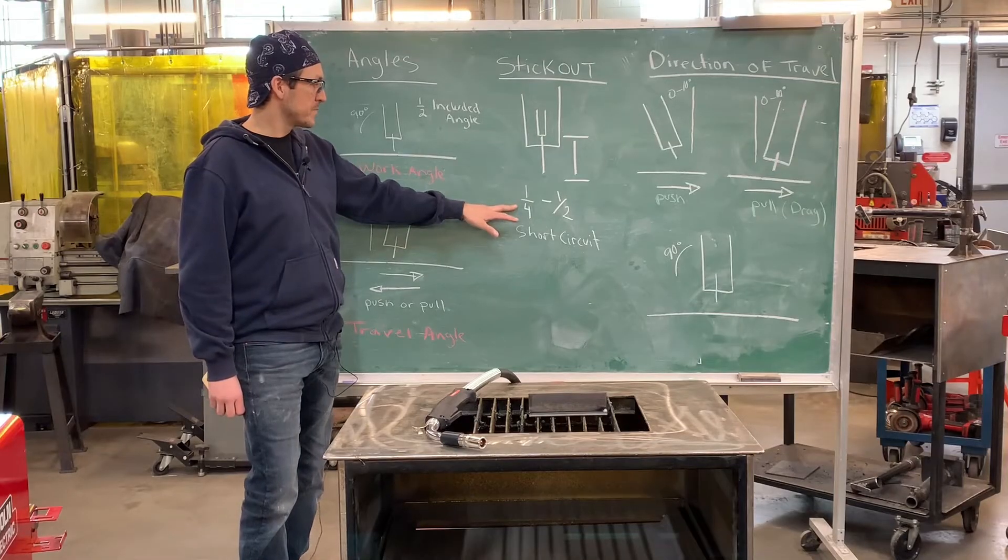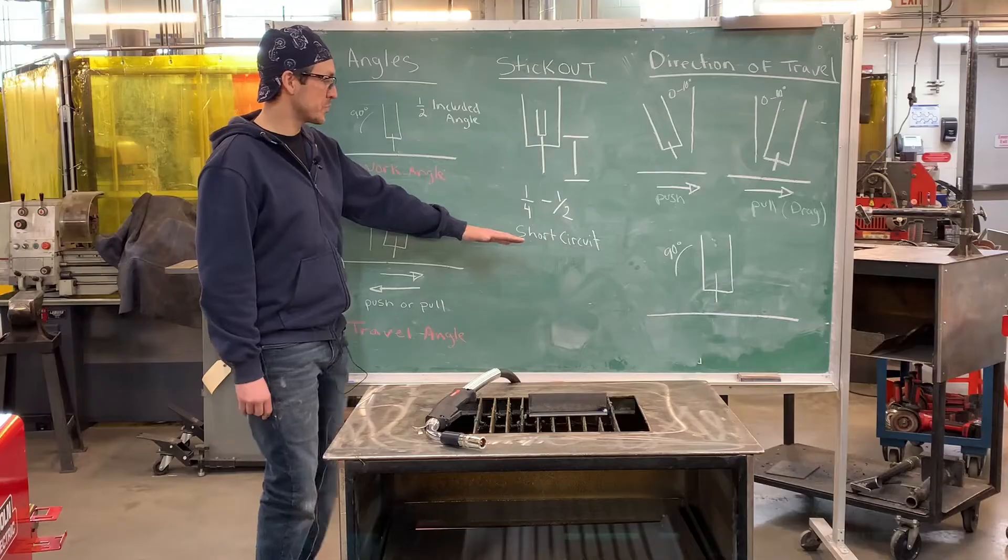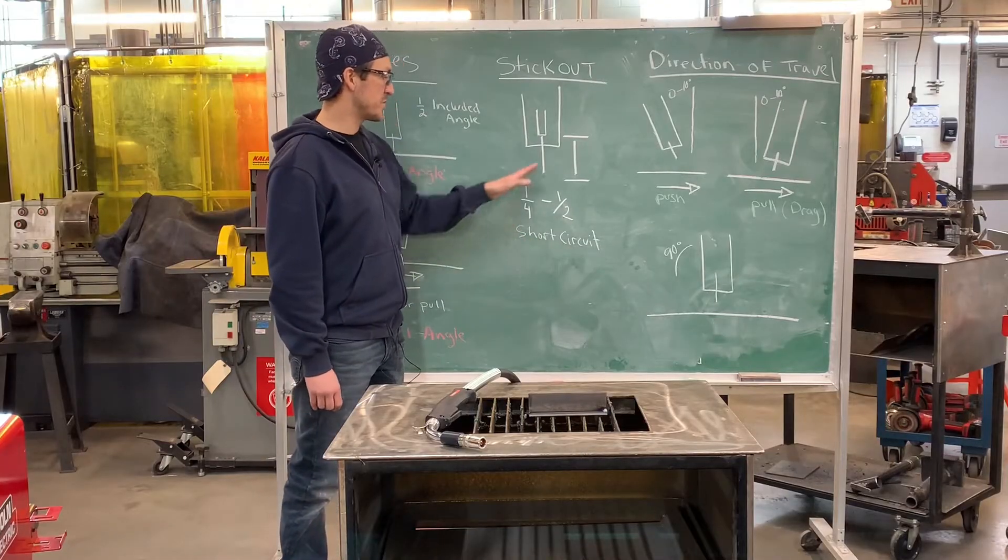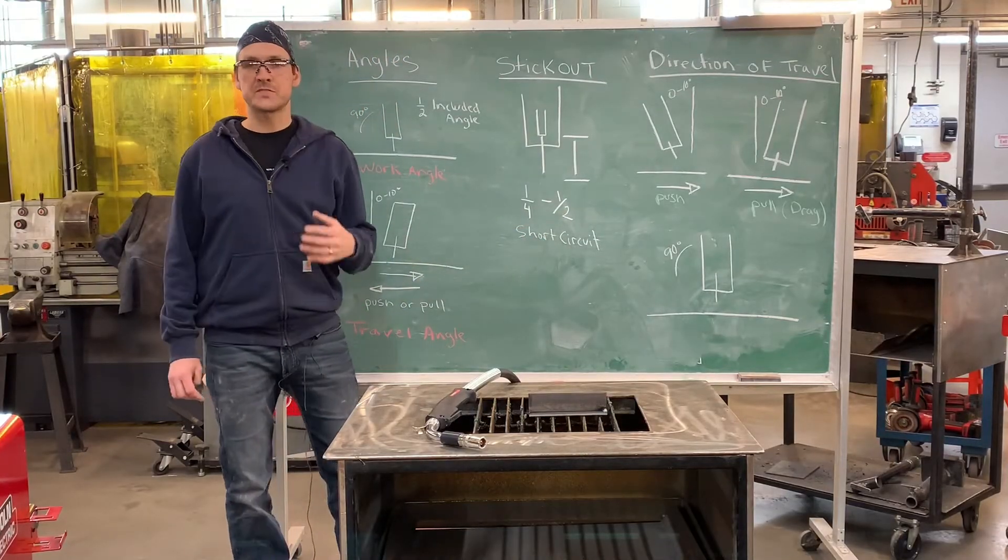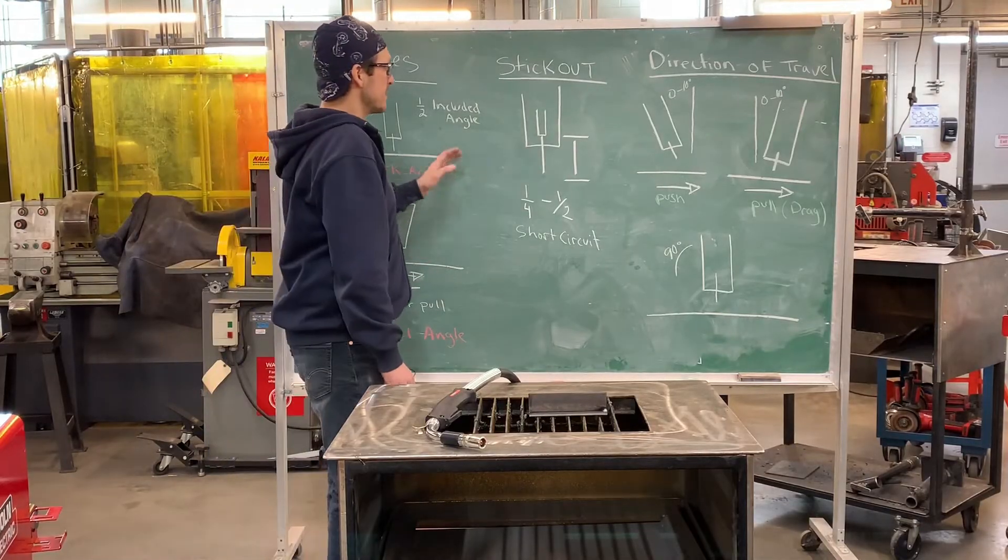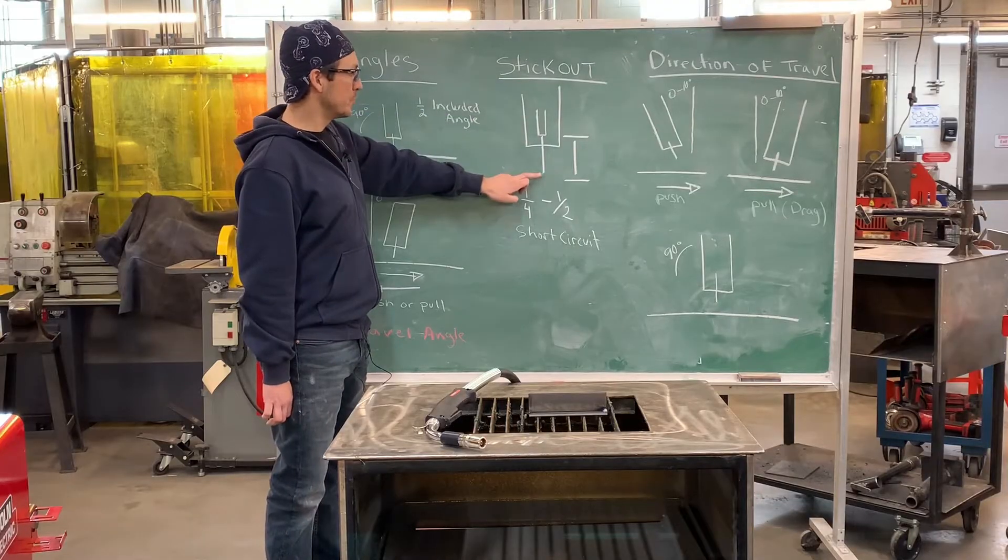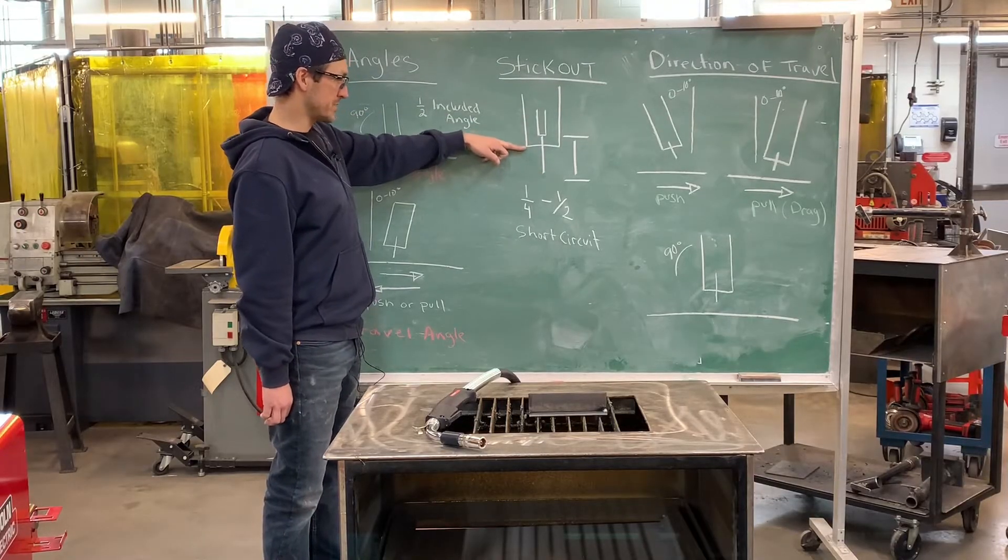It doesn't mean we're stuck between a quarter and half inch—it just means for short circuit transfer, this is where you want to be. We'll talk about transfer modes in a separate video. Again, the distance is from the end of the contact tip to the wire, not the actual nozzle.